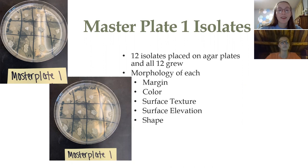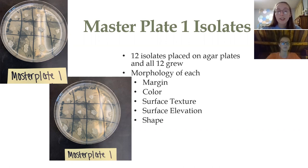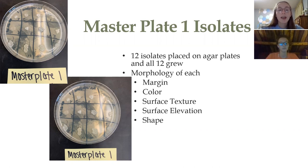We characterized the isolates through morphology, looking at the margin, color, surface texture, surface elevation, and shape. It was a little difficult to identify some of these characteristics, especially surface elevation, since we only had pictures and couldn't physically touch the plates. As you can see, there is not much diversity within these isolates — they are very similar to one another — so we had to complete more tests to determine differences and see if any were antibiotic producers.